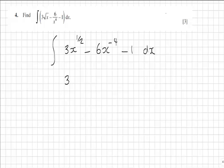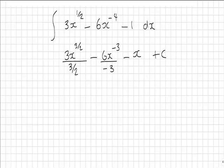So in the first instance, we're going to get 3x to the 3 over 2—that's adding 1, or 2 halves—divided by 3 over 2, minus 6x to the minus 3 (remember we're adding 1 to the power), divide by minus 3, minus x, and we also have our constant of integration.